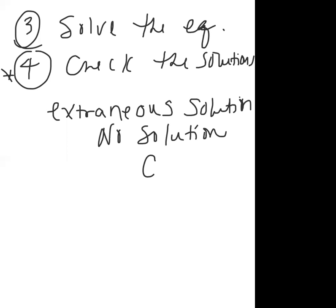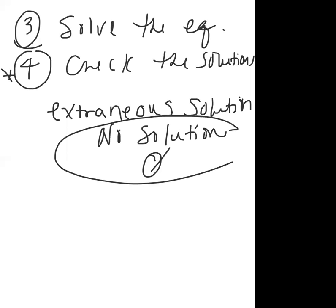To check, take your answer, plug it back into the original problem, and substitute it in for the variable. If the result makes the original problem false, you cannot count it as a solution — you must reject it. That rejected answer is called an extraneous solution.